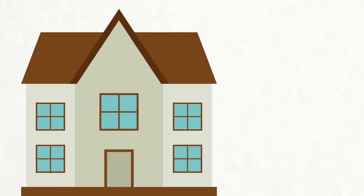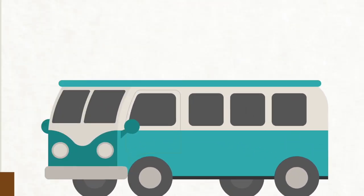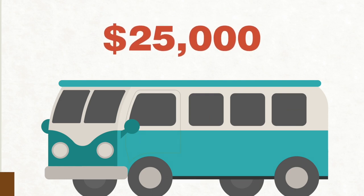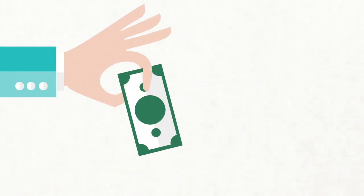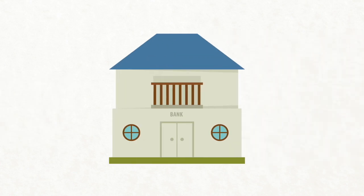Let's say you work in an after-school program that buys a van. It's shiny, it's new, it costs $25,000. You have decided that the useful life of the van will be five years. As far as you're concerned, you spent $25,000 on a van and that cash is gone. It took a nice bite out of your bank account.